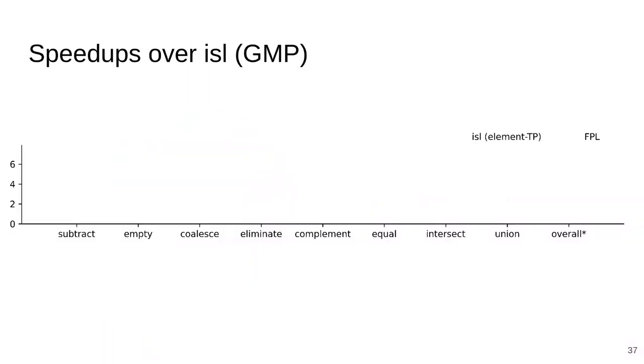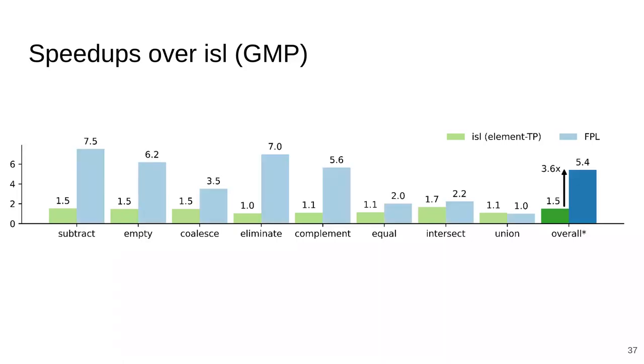Now we come to the speedups. ISL's element-wise transprecision approach has a speedup of around 1.5x over ISL using its default configuration of arbitrary precision arithmetic. On the other hand, FPL has a speedup of 5.4x over ISL using arbitrary precision arithmetic and 3.6x over ISL with its element-wise transprecision optimization.